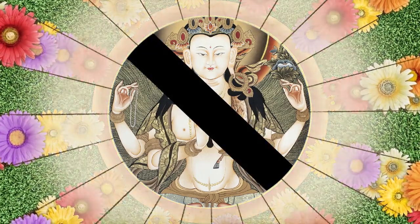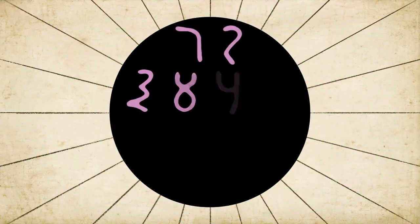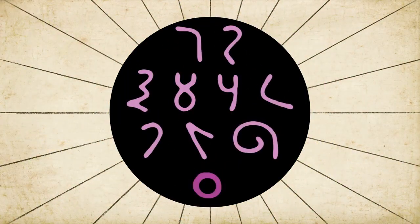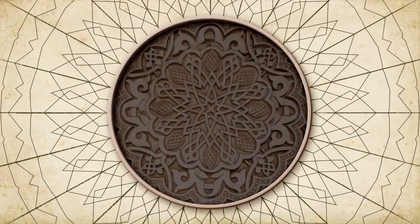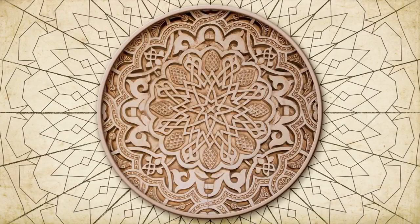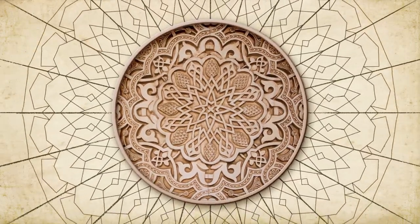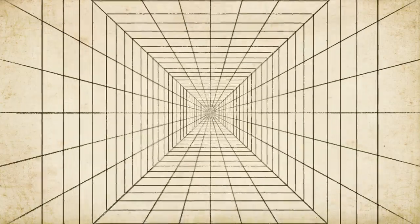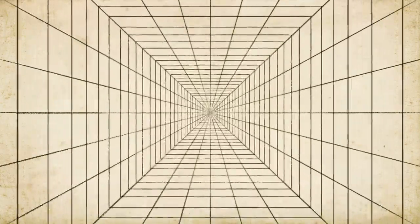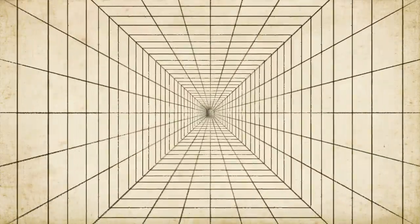An Islamic ban on figurative art, the adoption of Hindu numerals, and a passion for mathematics drove Muslim artists to develop some of the most intricate geometric patterns. And while these artists were not allowed to reference real objects in their work, the Arab Caliphate's introduction of advanced mathematics into Europe greatly influenced figurative art and led to the development of a major breakthrough in representation.